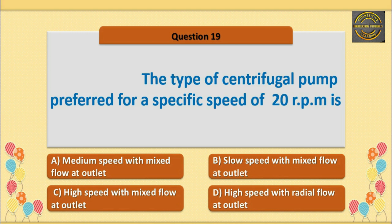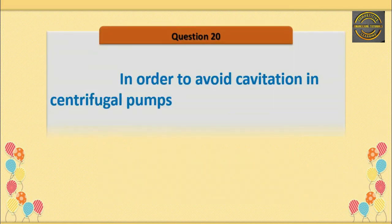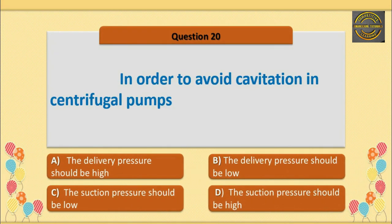Q19. The type of centrifugal pump preferred for a specific speed of 20 rpm is — option C is correct — high speed with mixed flow at outlet. Q20. In order to avoid cavitation in centrifugal pumps — option D is correct — the suction pressure should be high.